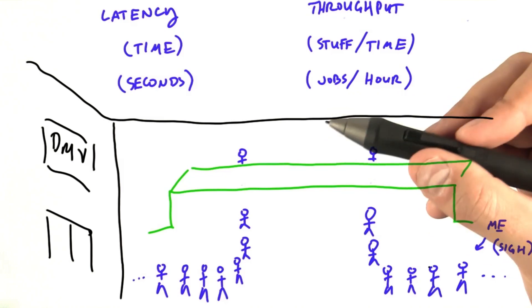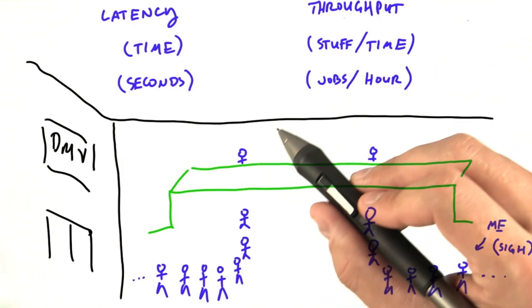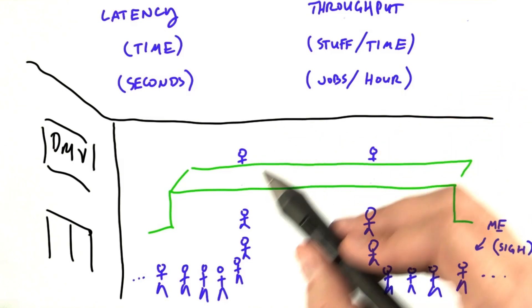You want to spend as little time in the DMV as possible. Instead, however, the DMV optimizes for throughput, specifically the number of customers they serve per day.